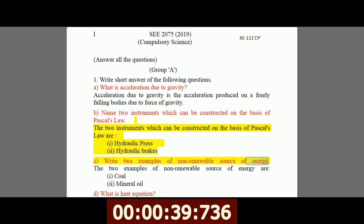C, write two examples of non-renewable source of energy. The two examples of non-renewable source of energy are: I, coal, II, mineral oil.